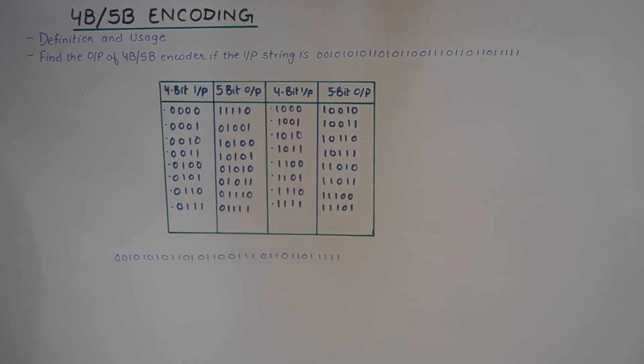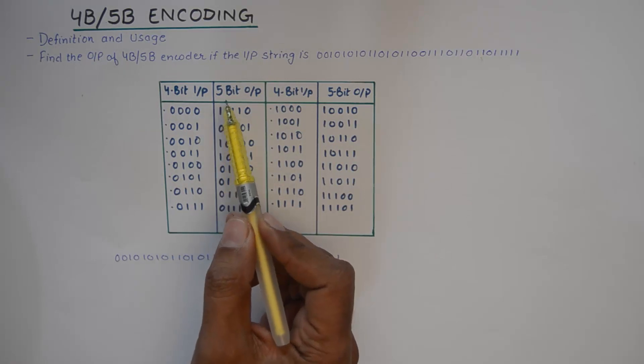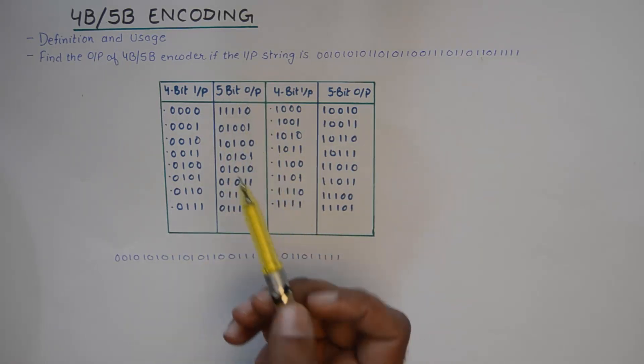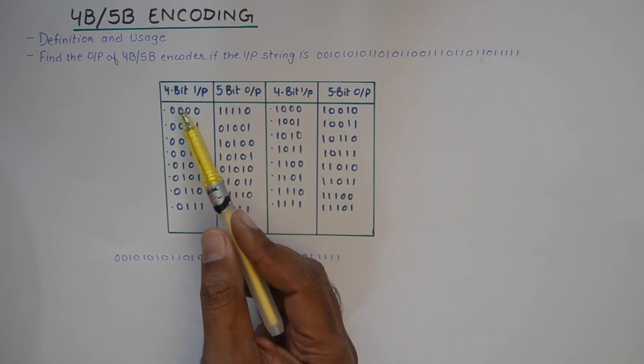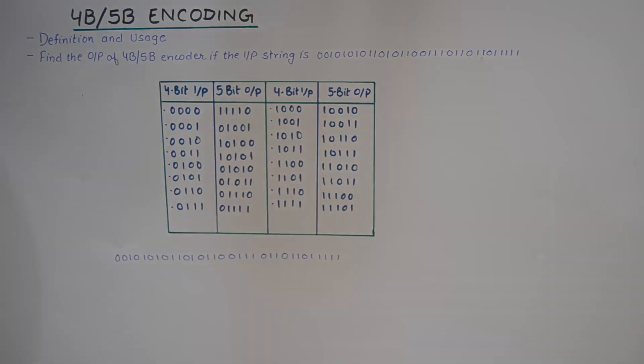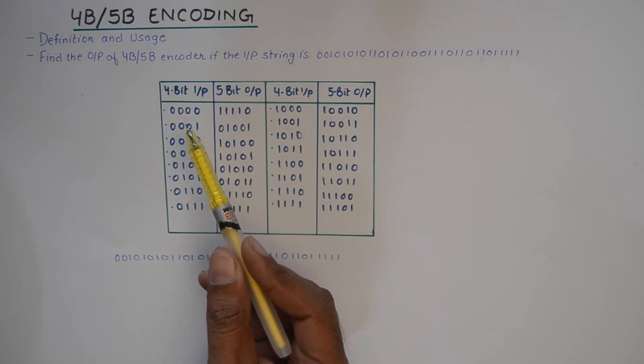Now this encoding scheme takes a 4-bit input and generates a 5-bit output. So with 4 bits of input we could have 16 possible combinations that I've written here, and for each of the possible input values at the encoder,